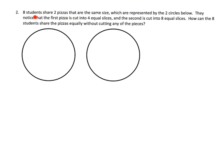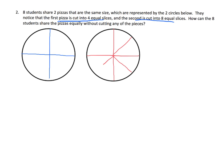In this problem, it says eight students share two pizzas that are the same size, represented by two circles. The first pizza is cut into four equal slices — one, two, three, four. The second is cut into eight slices. I'm going to start by cutting it into four equal slices, and then cut each one of those in half, giving us eight equal slices.